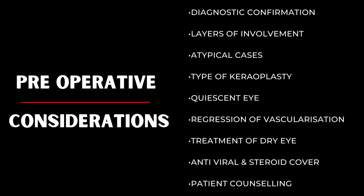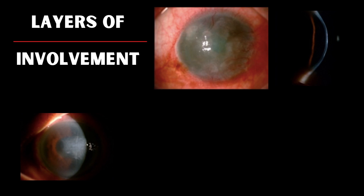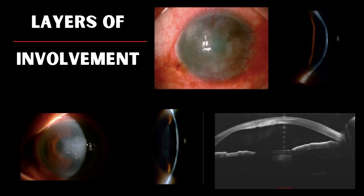Coming to preoperative considerations. It is important to know the layers of involvement, and this is best done in the acute stage. This shows the first patient with diffuse involvement of the cornea; however, slit examination shows that only the anterior stroma is involved. By contrast, the next patient has only central involvement, but stromal involvement and edema can be seen on the slit picture. In these cases, an ASOCT helps us to delineate specific layers of involvement. Based on this delineation, a decision can be taken about whether to proceed with a DALK, EK, or PK.